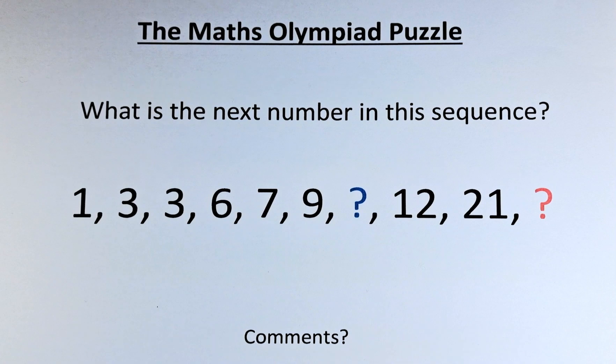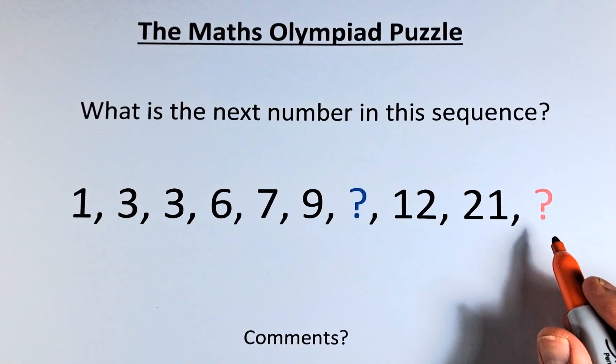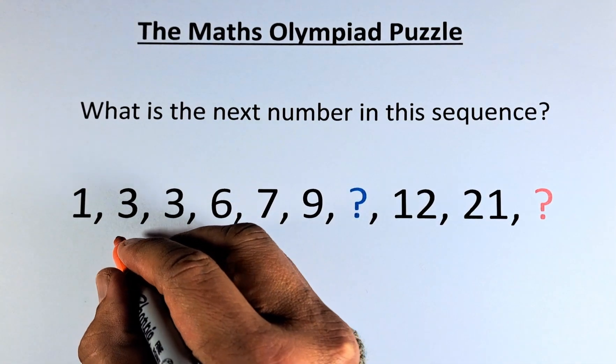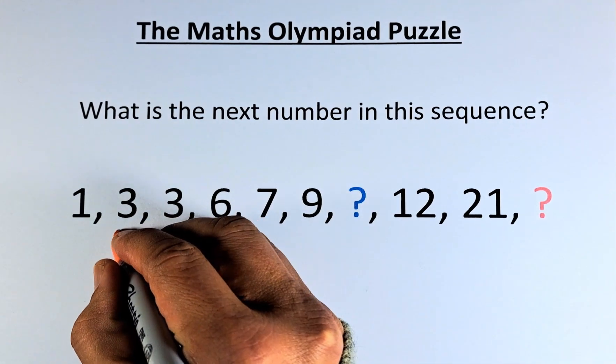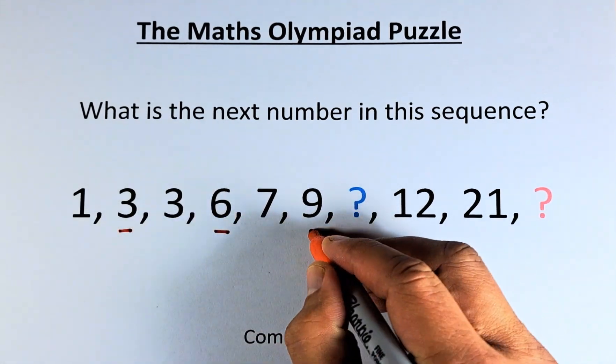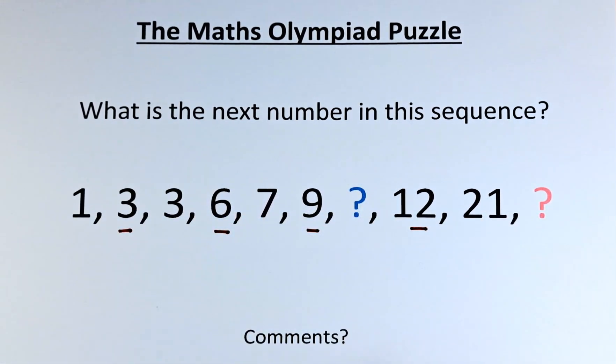The first one is to find the orange or the red question mark. We look at the second number, the even number. So 3, 6, 9, 12. You can see that it's going to increase by 3 each time.